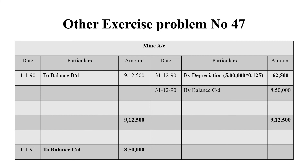For the year 1990, we bring down the previous year's mine account balance of 9,12,500. Depreciation for that year: 5 lakh tons × 0.125 = 62,500 rupees. So the balancing figure is 8,50,000. The grand total on both sides is 9,12,500. On 1-1-1991, we bring down the balance of 8,50,000.